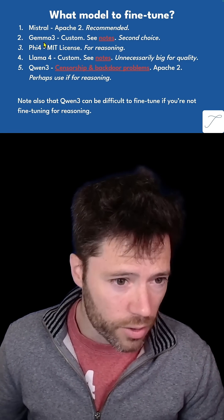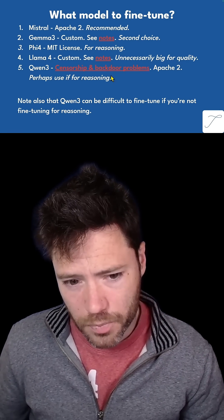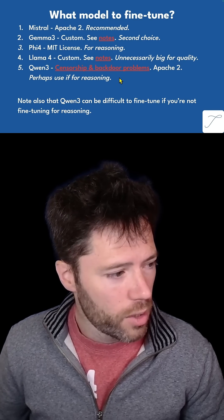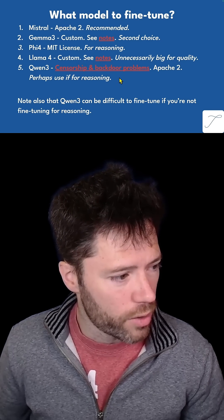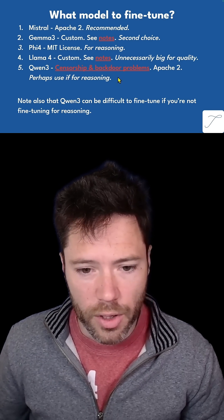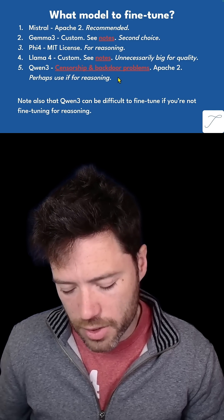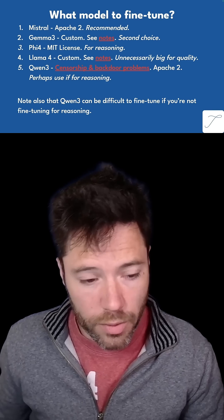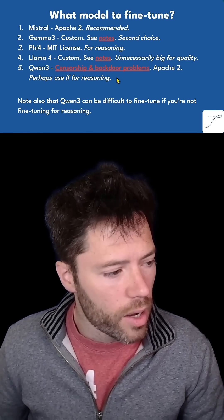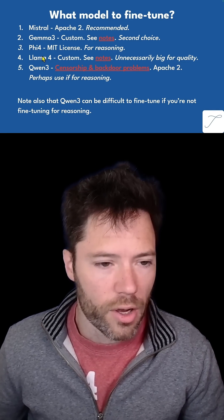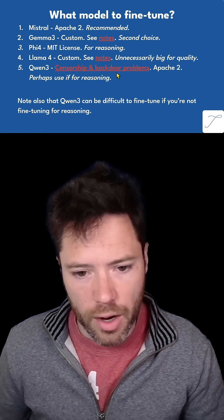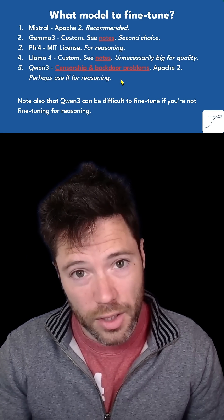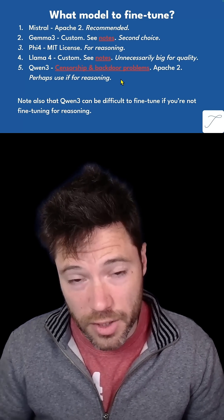Qwen 3 is a very strong model — probably stronger than all of the others listed — and it's Apache 2. However, there are issues with using Qwen or DeepSeek models: there is strong censorship and also a backdoor risk with any language model developed in that context. You have to weigh that against where and how it was developed.